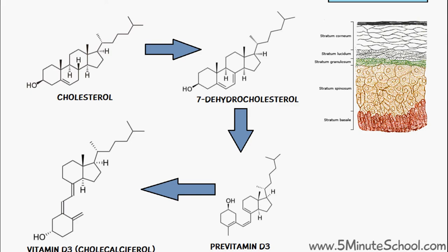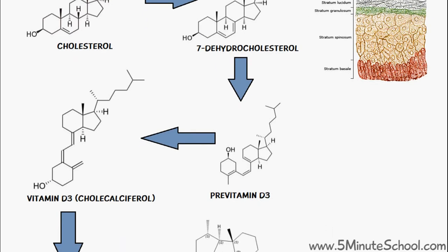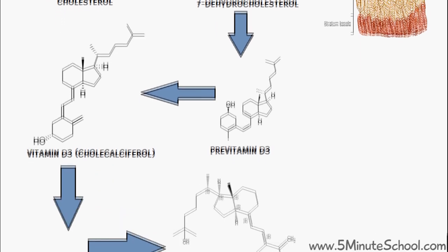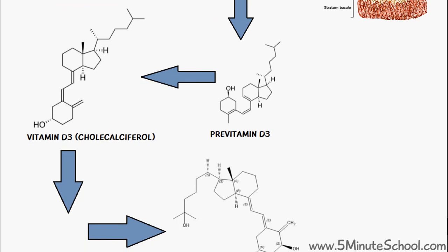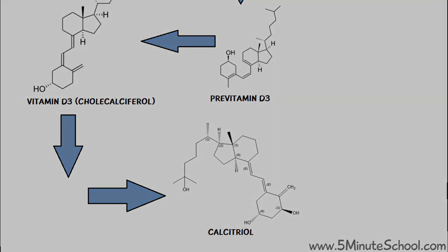Then this 7-dehydrocholesterol is converted into pre-vitamin D3, and then pre-vitamin D3 spontaneously forms vitamin D3, which is also known as cholecalciferol. Finally, this vitamin D3 is converted into the active form of vitamin D, which is known as calcitriol.